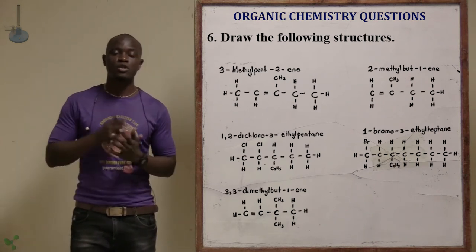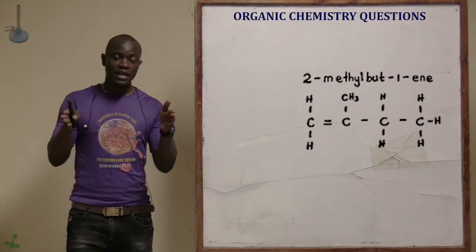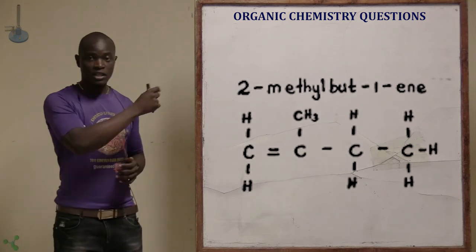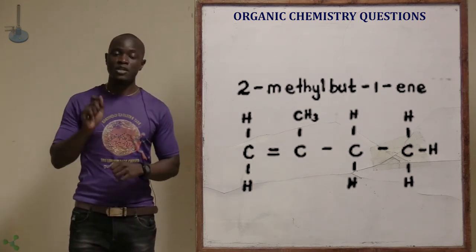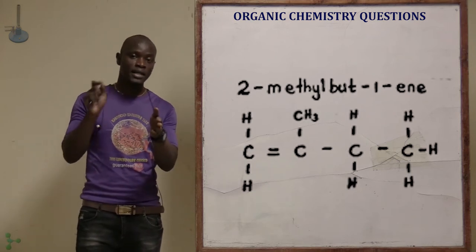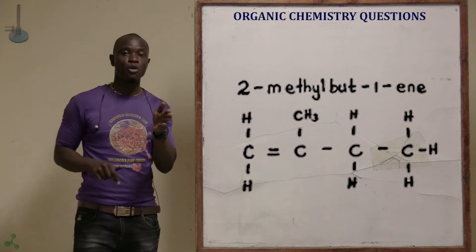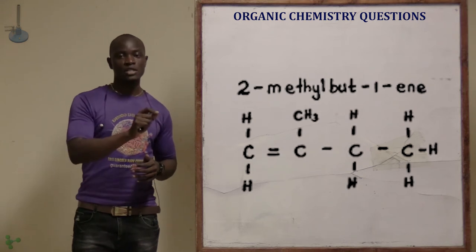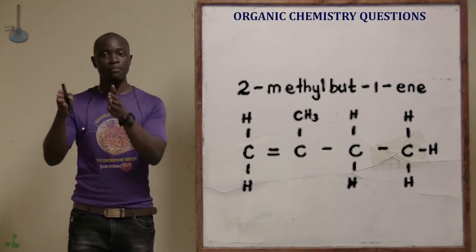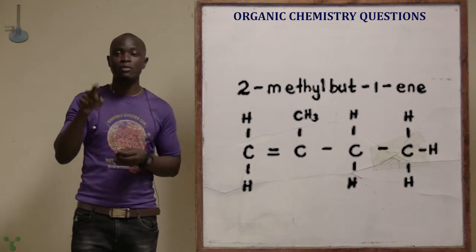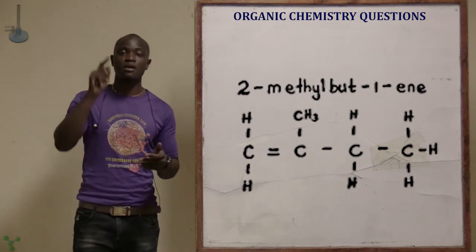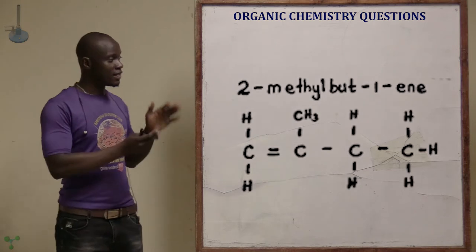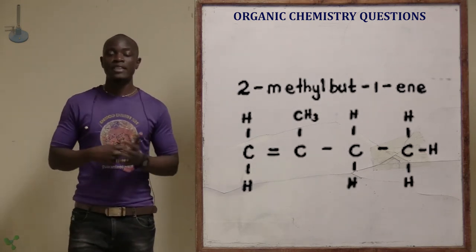The second structure is 2-methylbut-1-ene. But- means 4 carbon atoms, so draw 4 carbons numbered 1 through 4. It says 1-ene, so draw the double bond after the first carbon. Then populate the branch: at carbon 2, draw a methyl group (CH3). Finally, populate remaining covalent bonds with hydrogens. That is the structure of 2-methylbut-1-ene.